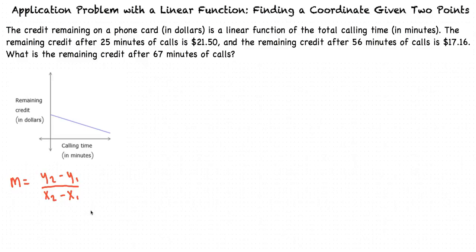We're told that the remaining credit on the phone card after 25 minutes of calls is $21.50, and after 56 minutes is $17.16. We can then identify our first point as (25, 21.50) and our second point as (56, 17.16).